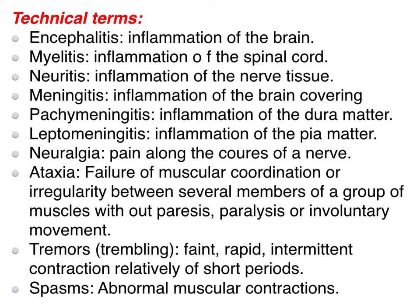Pachymeningitis is inflammation of the dura mater. Leptomeningitis is inflammation of the leptomeninges. Neuralgia refers to pain along the course of a nerve. Ataxia is failure of muscular coordination or irregularity between several members of a group of muscles, without paralysis or voluntary movement.